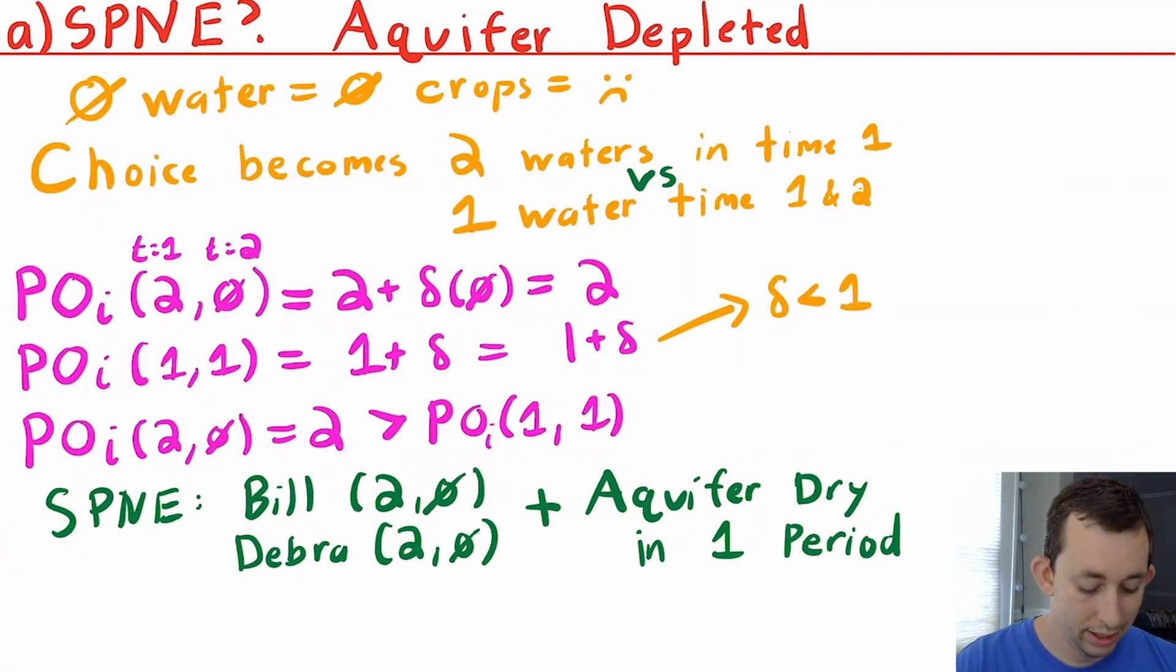Now, if Debra, for example, says, well, maybe I want to pull out one unit of water today and one unit of water tomorrow, then that's going to give me a payoff of one plus delta, which is less than if I just pull out two buckets of water to begin with. So both people have a dominant strategy just to pull out two buckets of water today. So that's exactly what's going to happen. The aquifer is going to get depleted, that's going to happen in one period. And in this example, there's no subgame perfect Nash equilibrium in which the aquifer does not get depleted.